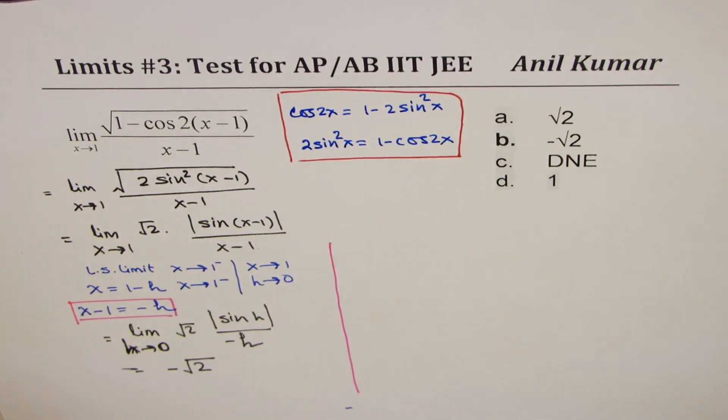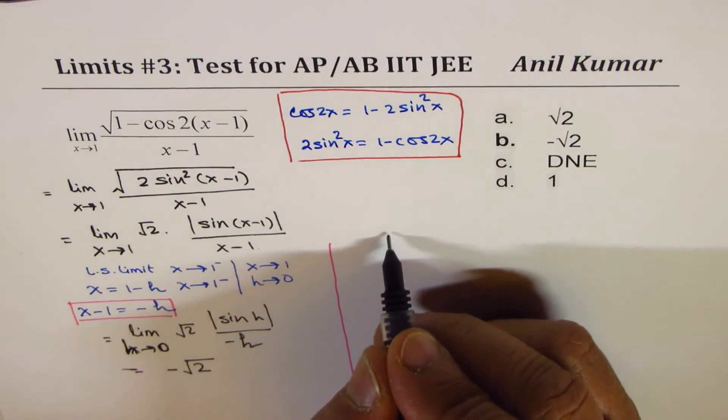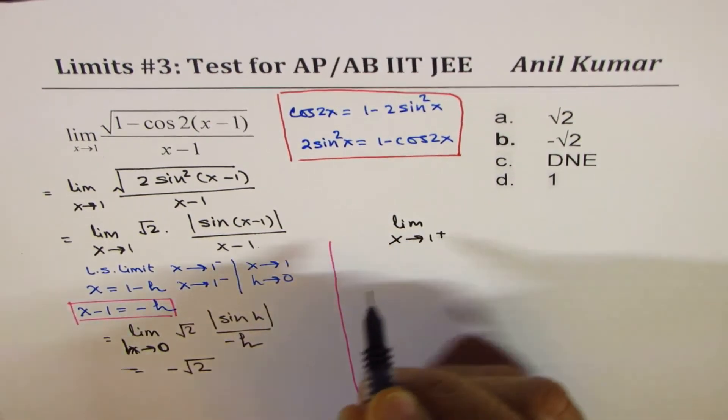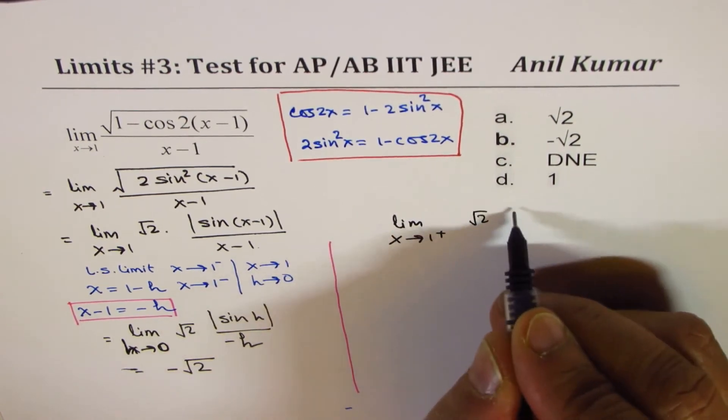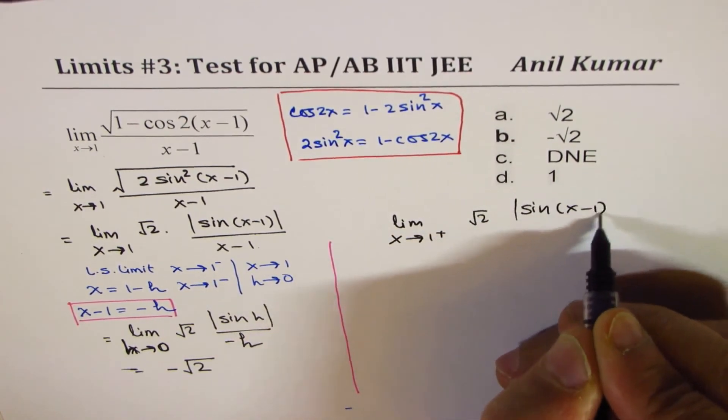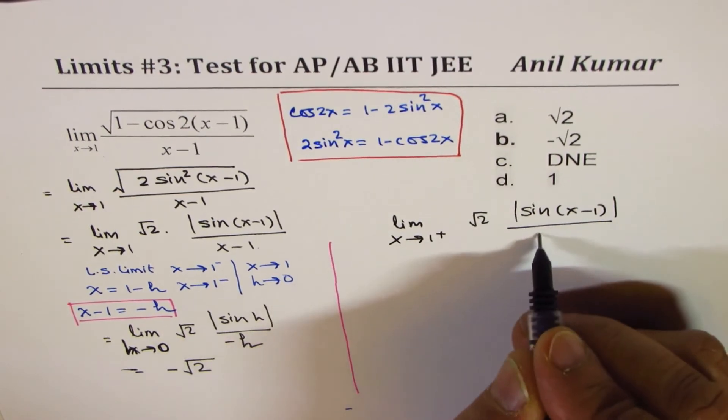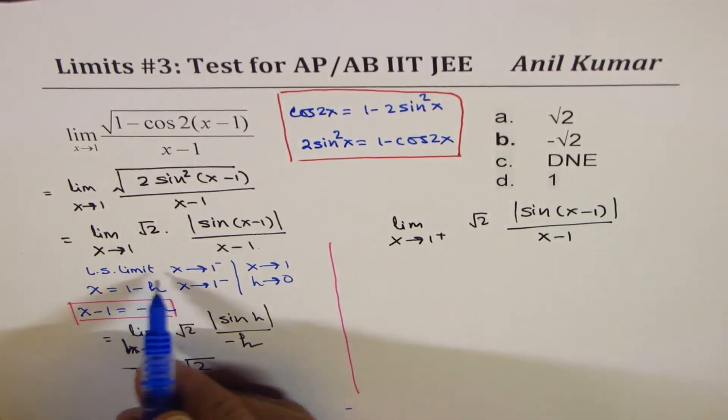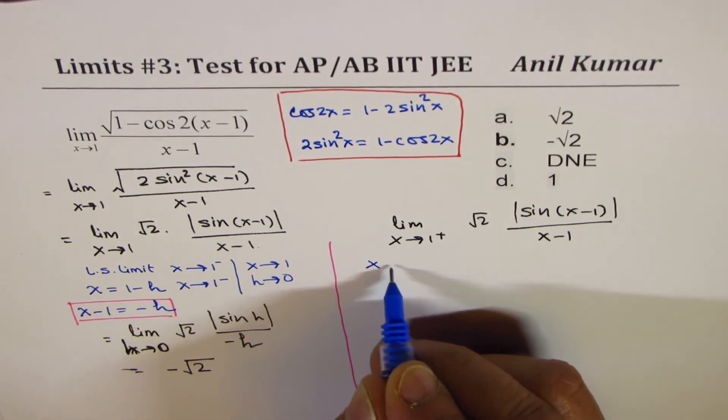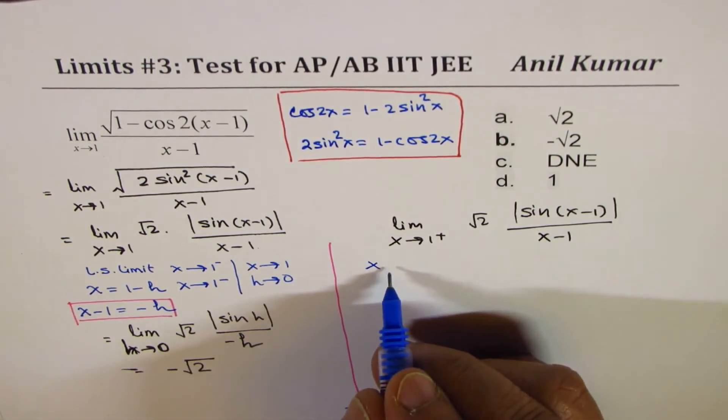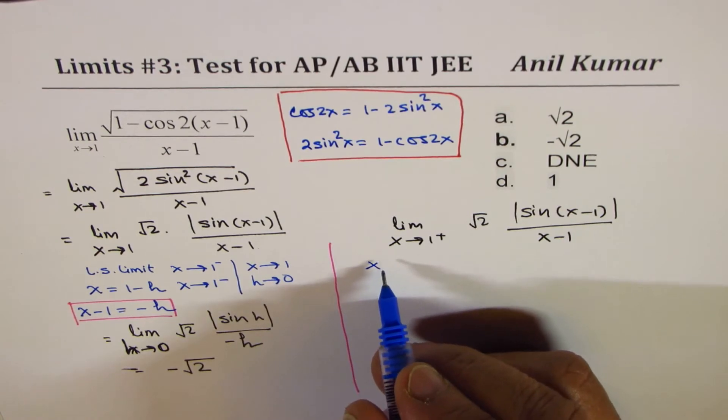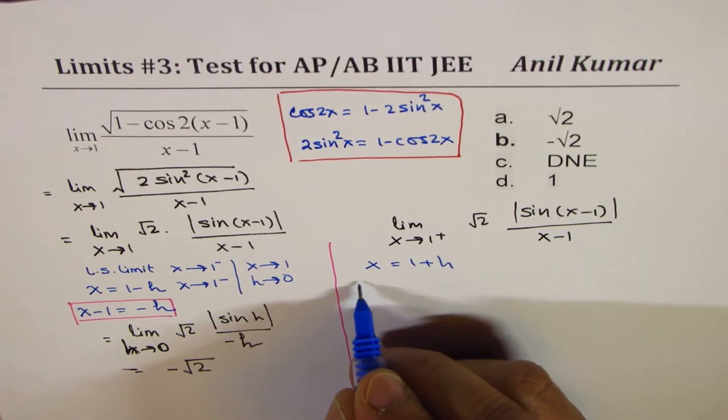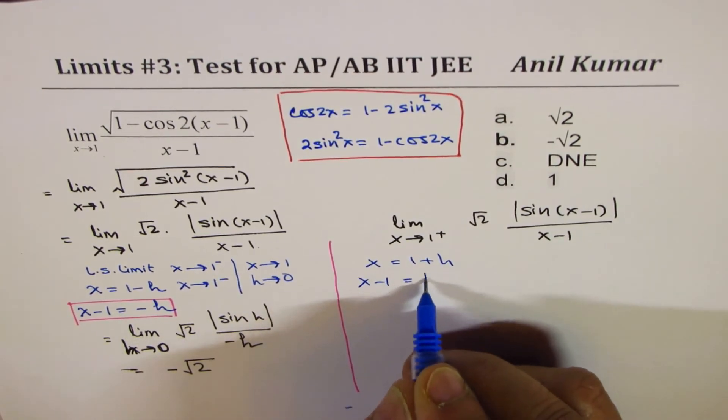However, if I find the limit from the right side, limit when x approaches 1 from the right side for square root 2, absolute value of sine (x-1) over x minus 1. So we'll do the same substitution. x now is approaching from the right side. That means x equals 1 plus h. So x minus 1 is plus h.